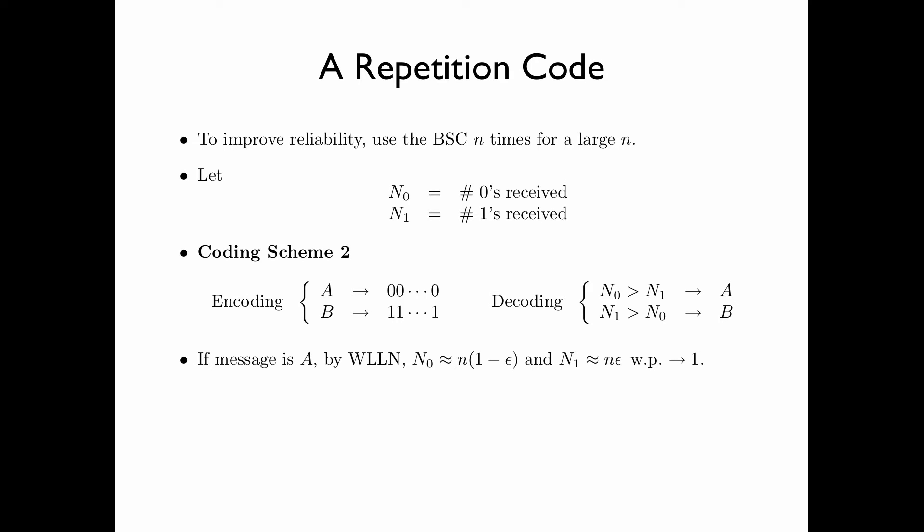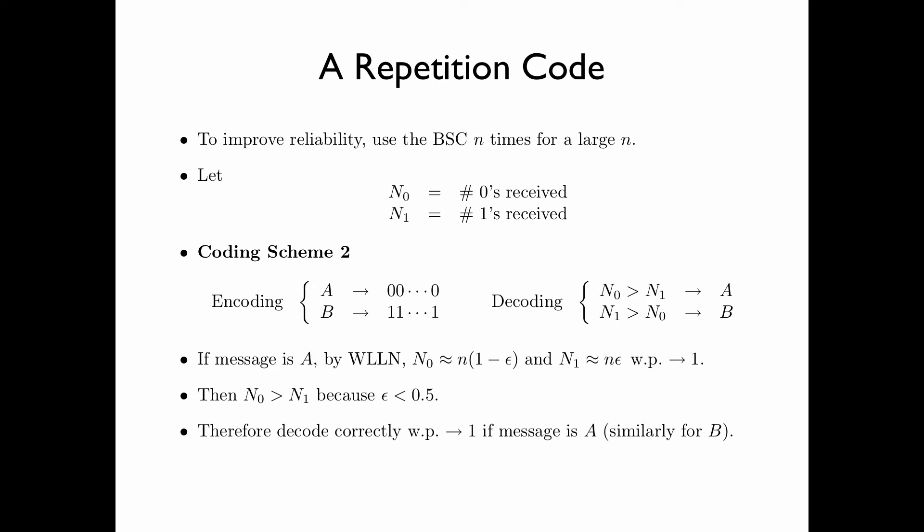If the message is A, by the weak law of large numbers, n_0 would be approximately equal to n times (1 minus epsilon), where 1 minus epsilon is the probability of no crossover, and n_1 would be approximately equal to n times epsilon, with probability tending to 1 as n tends to infinity. Then n_0 would be greater than n_1 with high probability because epsilon is less than 0.5. Therefore, Coding Scheme 2 would decode correctly with probability tending to 1 if the message is A, and similarly if the message is B.